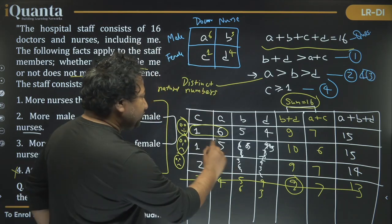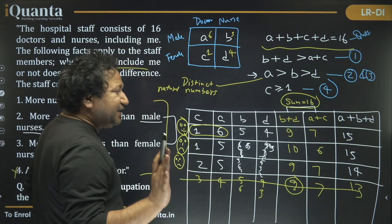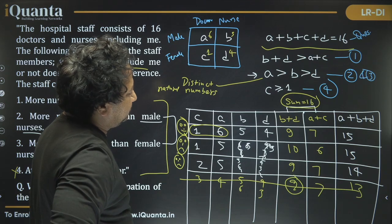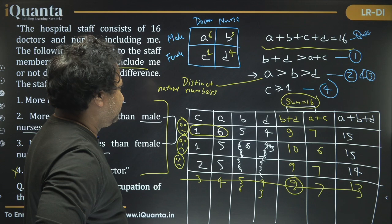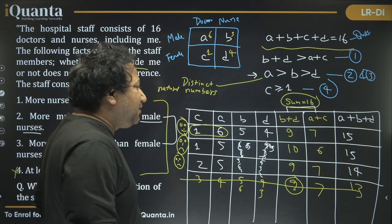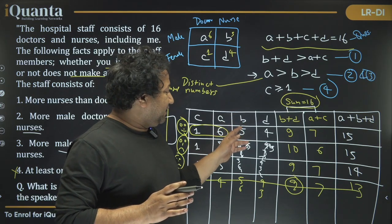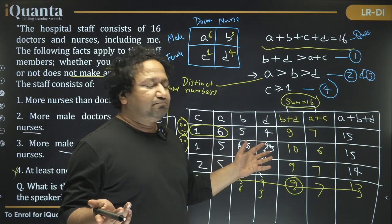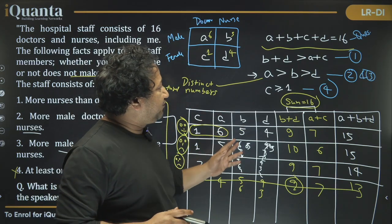The speaker must be from group a, b, or d, such that removing them keeps all conditions valid. If the speaker is from group b (male nurses), b becomes 4, equal to d = 4, violating b > d. If the speaker is from group a (male doctors), a becomes 5, equal to b = 5, violating a > b. So neither a nor b works.